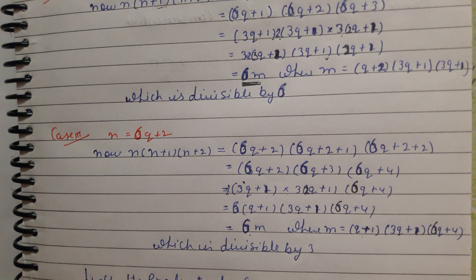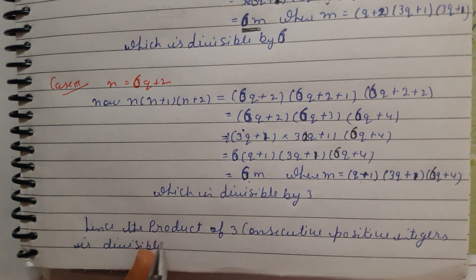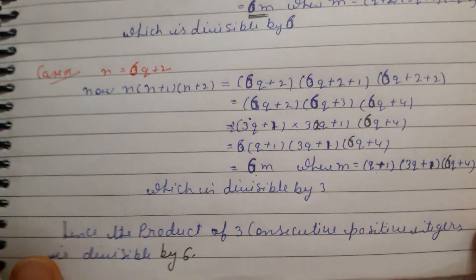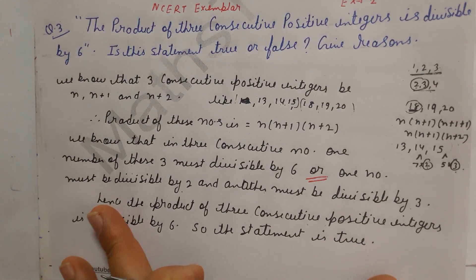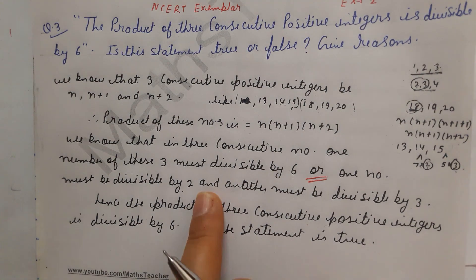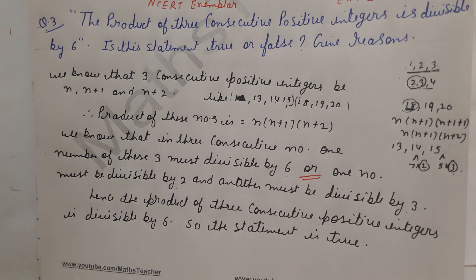The final answer: the product of 3 consecutive positive integers is always divisible by 6. This is the proof. If the question is true or false, write the simple statement answer. If it is 3 or 4 marks, write the full Euclid's lemma proof. In exercise 1.4 you will see many similar questions. If you have any doubt, please comment below. Thank you.